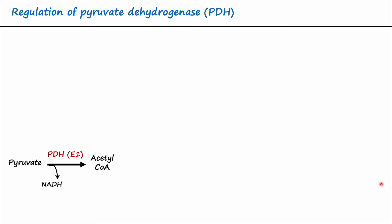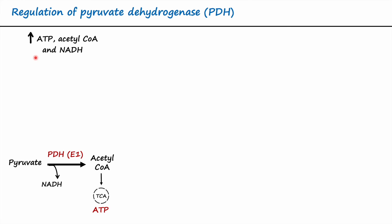Now let's talk about the regulation of pyruvate dehydrogenase enzyme. When too much pyruvate is being converted into acetyl-CoA, the reaction generates NADH, and the acetyl-CoA enters the TCA cycle to synthesize ATP. This increases cellular levels of ATP, acetyl-CoA, and NADH — an indicator of energy-rich status — which can activate an enzyme called pyruvate dehydrogenase kinase, abbreviated PDK. Being a kinase, PDK phosphorylates pyruvate dehydrogenase.